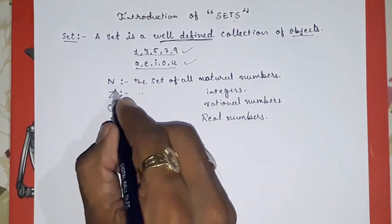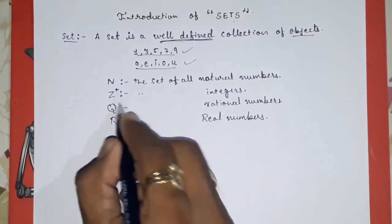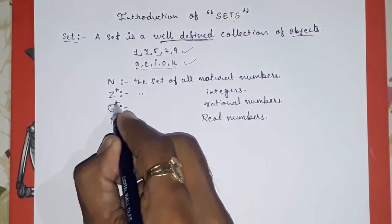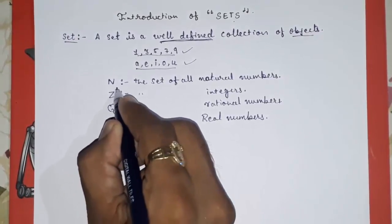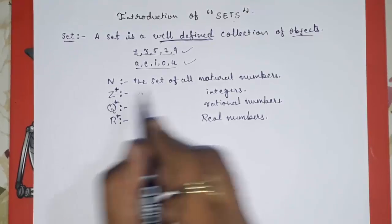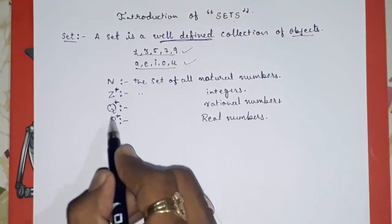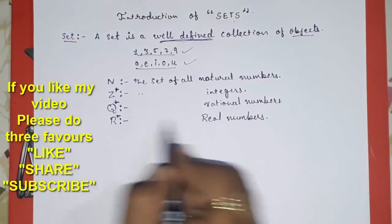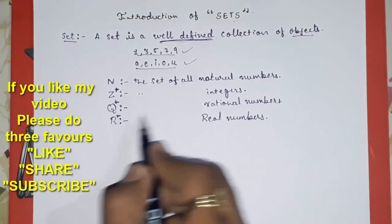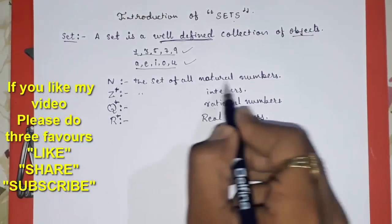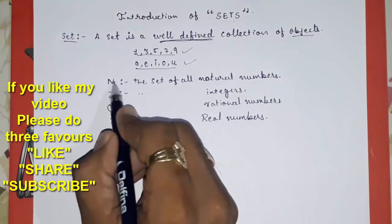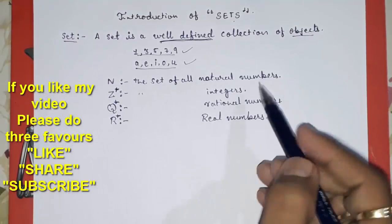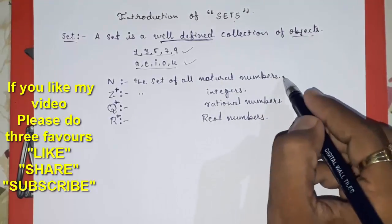When a plus sign is added to these symbols — like Z+, Q+, or R+ — you have to understand they are talking about positive integers, positive rational numbers, or positive real numbers only. For natural numbers, no plus sign is needed since natural numbers are all positive.